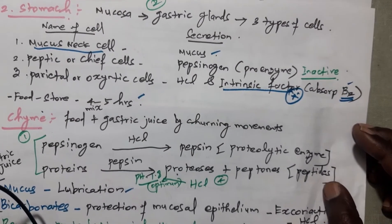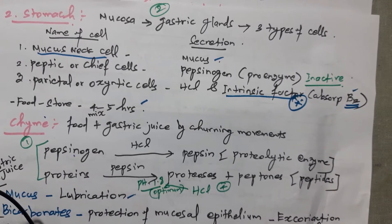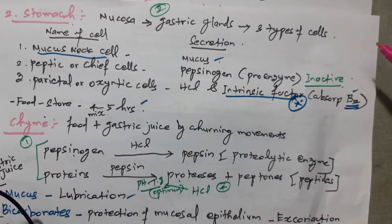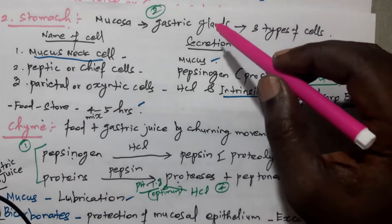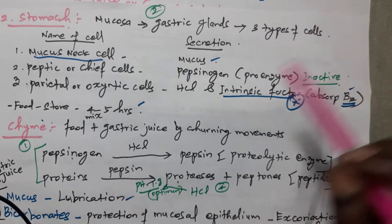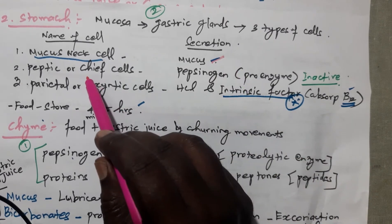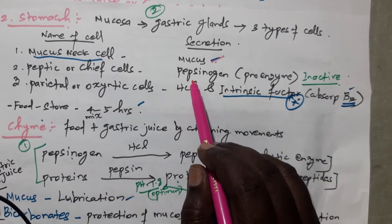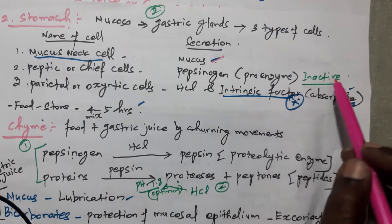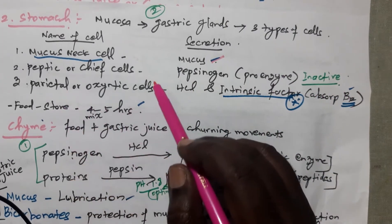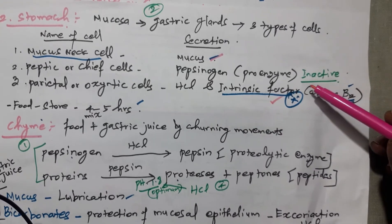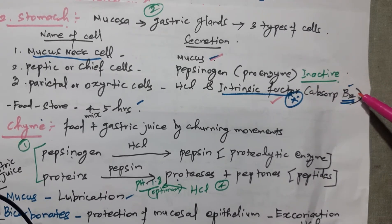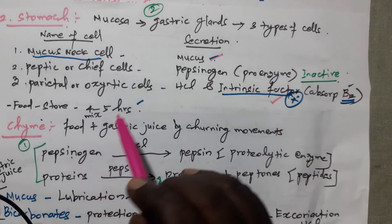Second is the stomach. The stomach consists of a mucosa layer of the alimentary canal, which has many gastric glands that secrete gastric juice. The gastric gland has three types of cells: one is mucus neck cells, which secrete mucus; another is peptic or chief cells, which secrete pepsinogen — a proenzyme, meaning it is in an inactive state; third is parietal or oxyntic cells, which secrete HCl and the intrinsic factor. The intrinsic factor is very important — it is helpful for absorption of vitamin B12.